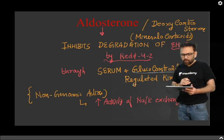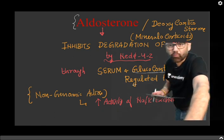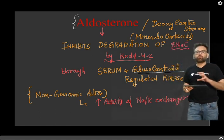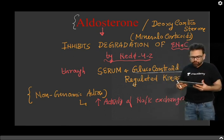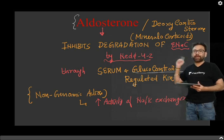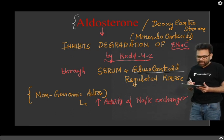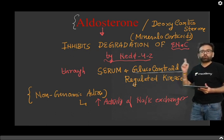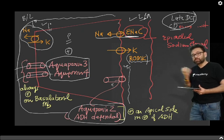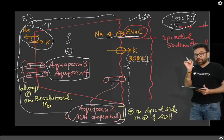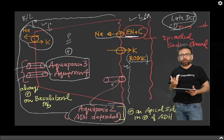Now we can go into more detail on aldosterone. As you know, there are really two mineralocorticoids — aldosterone and deoxycorticosterone — both acting as mineralocorticoids. The main function of aldosterone is to inhibit degradation of ENAC. Normally, ENAC — which causes reabsorption of sodium — is degraded by NEDD4-2. So NEDD4-2 degrades ENAC, and the main channel from where sodium enters is ENAC. If ENAC is degraded, sodium cannot be absorbed.